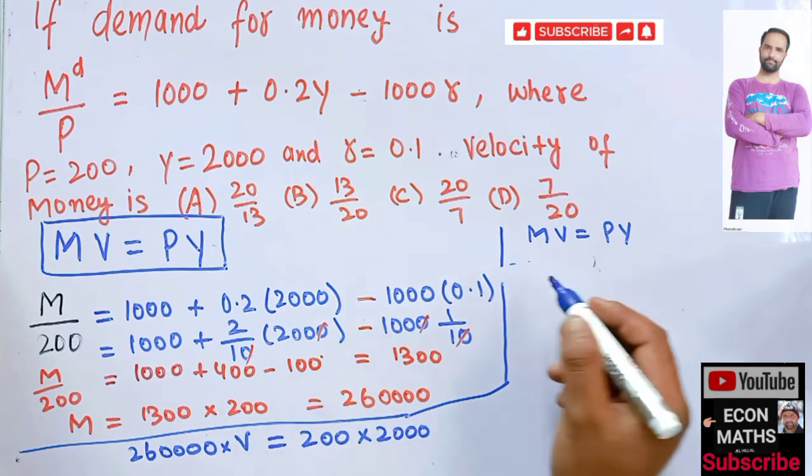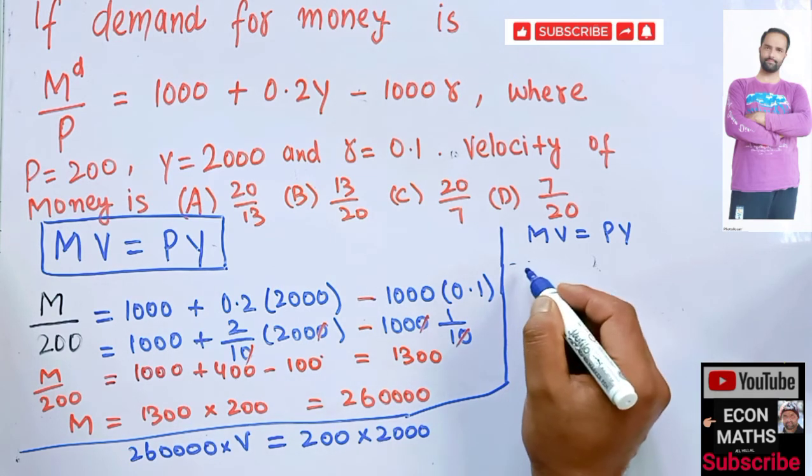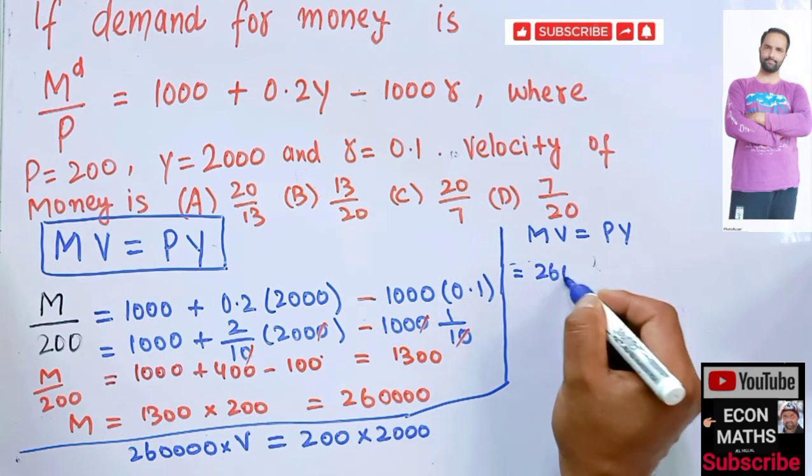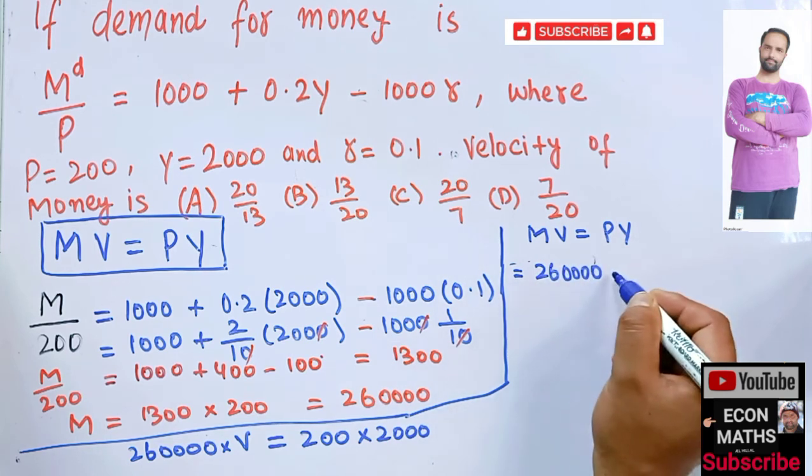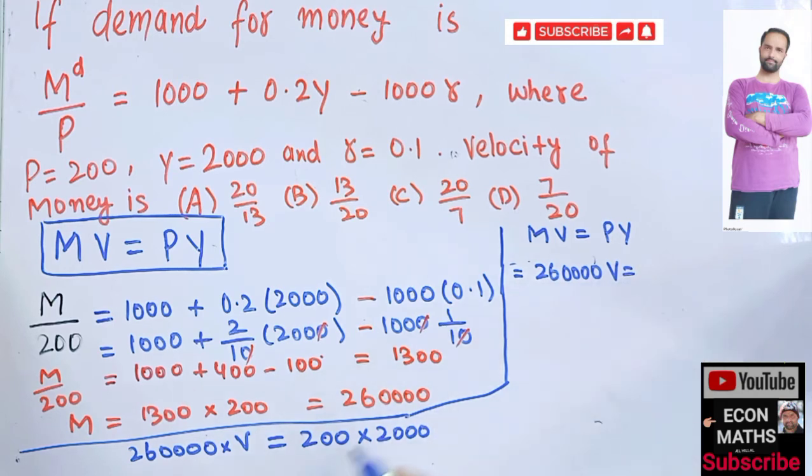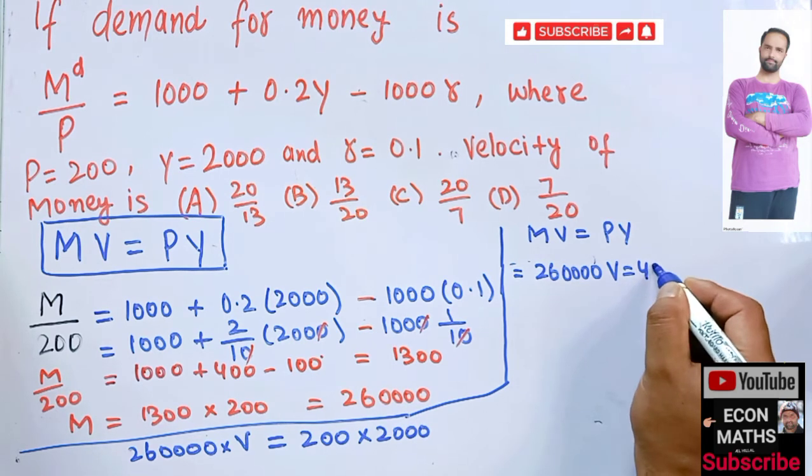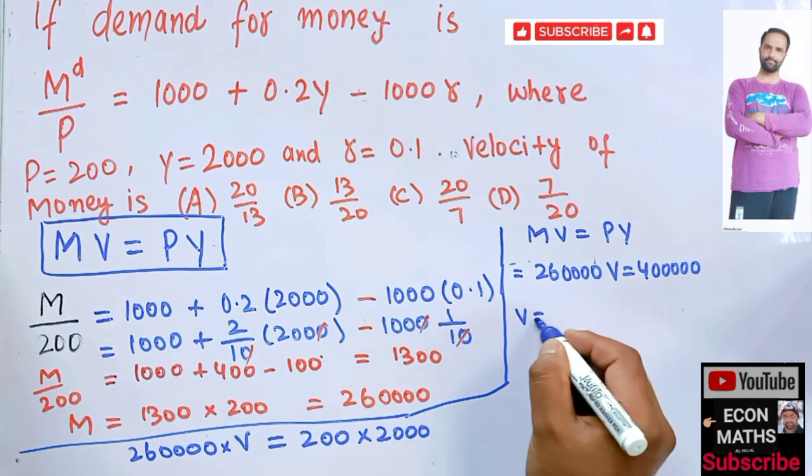Let me write now here. So we have 260,000 times V is equal to, we have four and five zeros. Or V is...